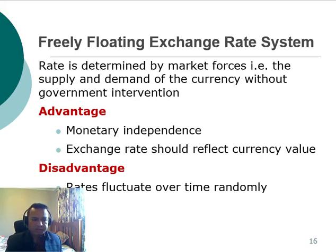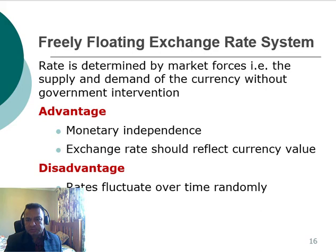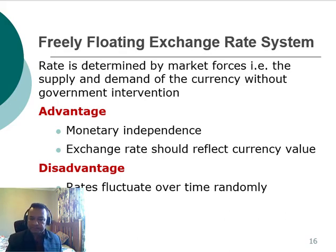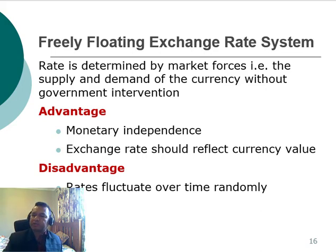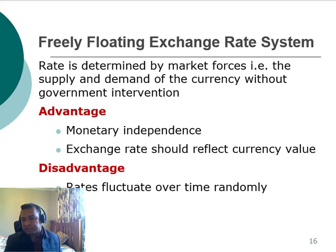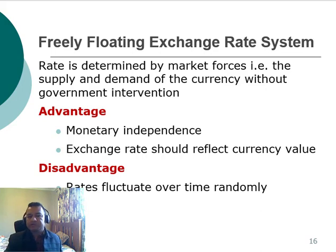The second exchange rate system is the freely floating exchange rate system, where the rate is determined by market forces — the supply and demand for the currency — without government intervention. For example, the Australian currency uses the freely floating exchange rate system. An advantage is monetary independence, and the exchange rate should reflect the true value of the currency. However, one of the biggest problems is that rates fluctuate randomly over time, as seen with the Australian dollar against the US dollar fluctuating heavily from 2009 to 2019.